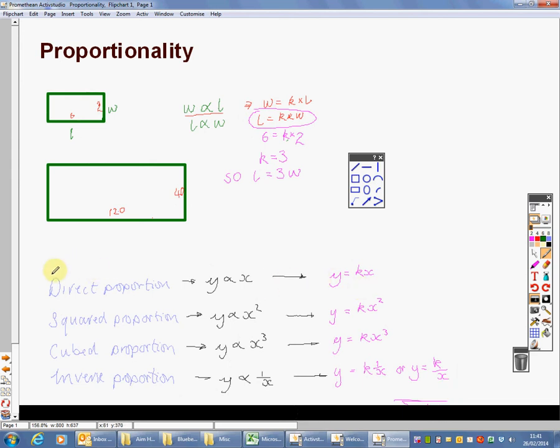You need to associate the words direct proportion with that formula there. You need to know that squared proportion with that one there, that cubed proportion will look like that one there, and inverse proportion will look like this one here. Now, very occasionally, they're nasty, and varies inversely proportional to the cubed. So it would be K over X cubed, or maybe inversely squared, K over X squared. But that's just a variant of this inversely one. You need to remember this. I'm now going to go and show you how to use it for some questions.